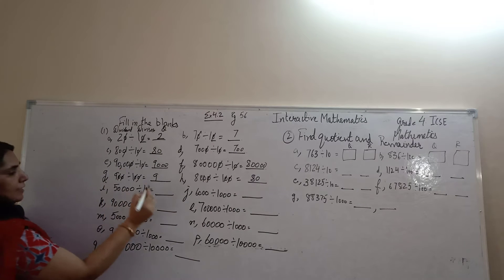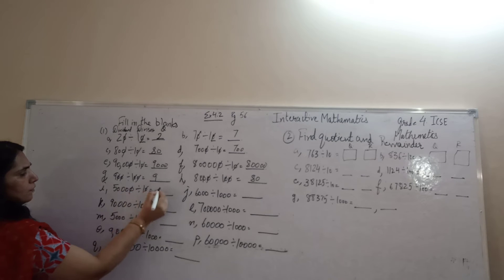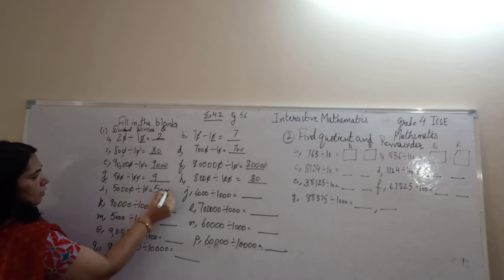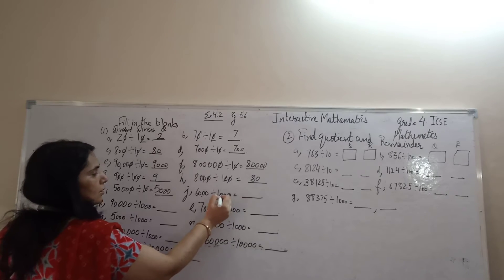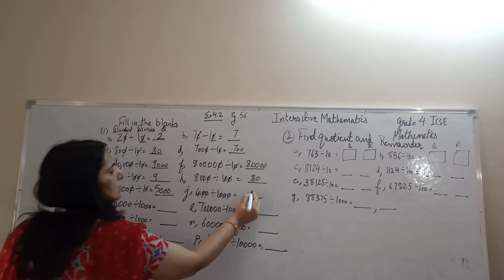50,000 divided by 10. 1 zero removed. Answer is 5,000. 6,000 divided by 1000. 3 zeros removed. 6.